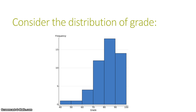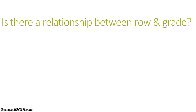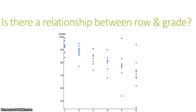I can also look at the distribution of the grades without considering at all where people were sitting. This is called a marginal distribution of grade. As you can see, it's kind of a skewed left distribution with a peak somewhere in the mid-80s. But if I want to know if there's a relationship between row and grade, looking at those two marginal distributions does not help me answer that question. What I really need to do is look at a bivariate distribution, a distribution that's looking at both of the variables together.